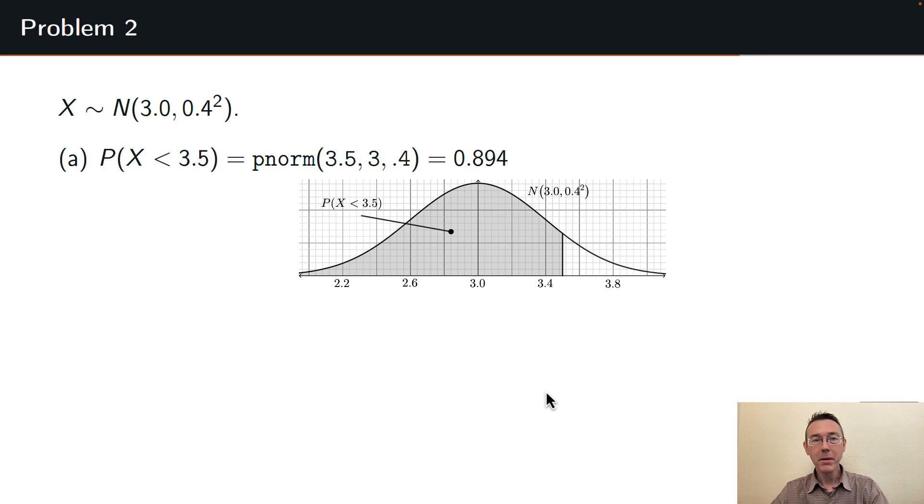All right, let's do parts B, C, and D just directly. We won't swipe back to R, but I want to make sure we get the calculations with the code and the pictures. The probability that X is greater than 2.5 in this same distribution. So now we're going to want area to the right of this value, X equals 2.5. The way we're going to get that is by taking the area to the left and subtracting it from 1, the total area under the graph. And that's represented by 1 minus pnorm of 2.5, 3, 0.4.